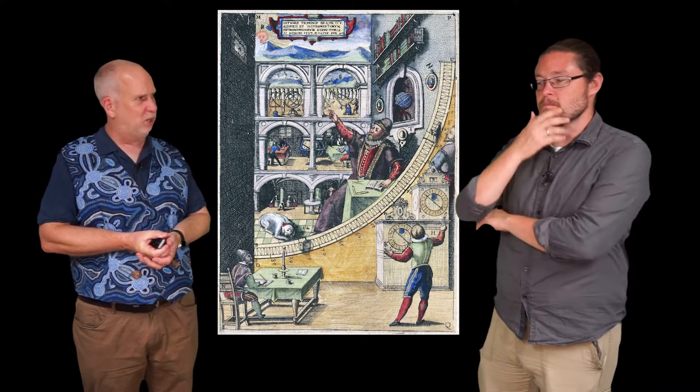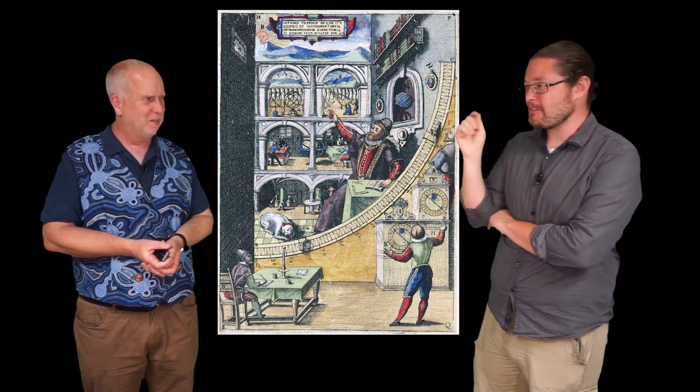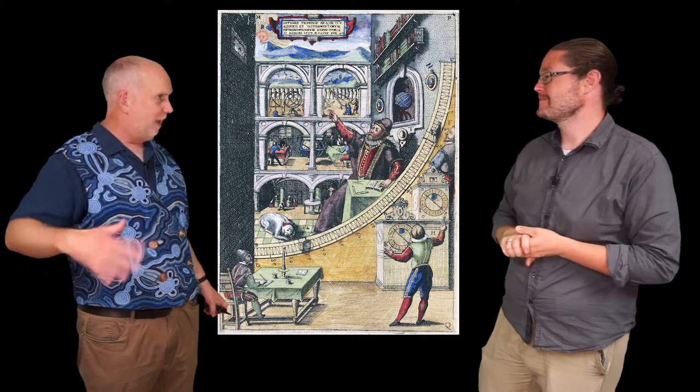And this model that Copernicus came up with, everything going around the Sun, did pretty well. It roughly explained what was going on, but not precisely. It was a little bit off. Whereas some of the previous ad hoc, you know, on Thursday it's over there, because they could just add more ad hoc-ness.